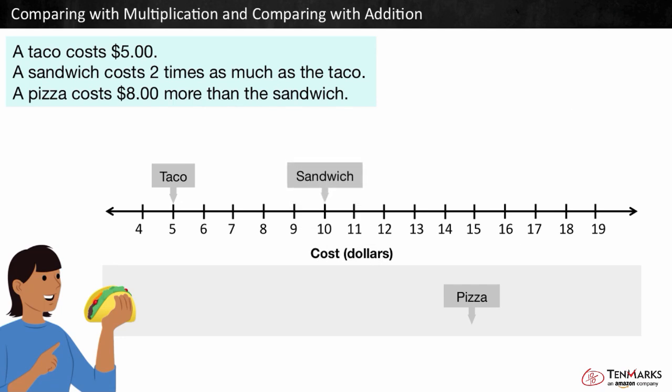Finally, the pizza costs eight dollars more than the sandwich. Eight dollars more is simply adding eight more. We just found out that a sandwich costs ten dollars. To find eight dollars more, we can add ten and eight.